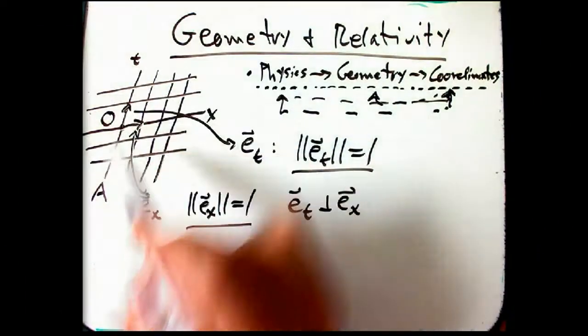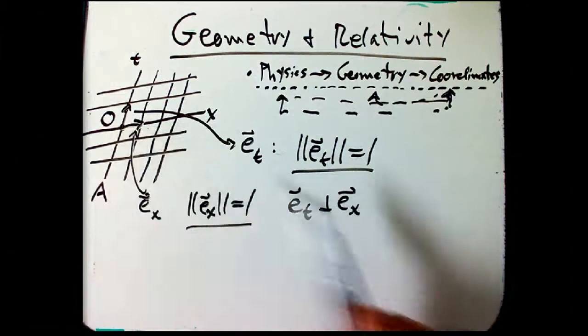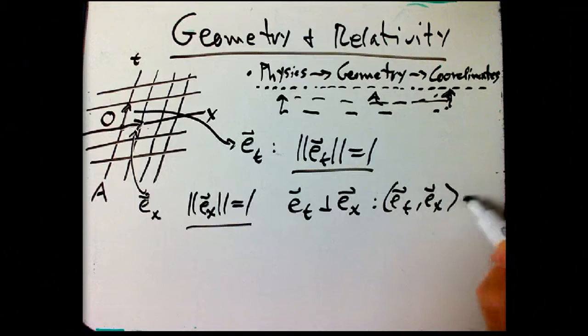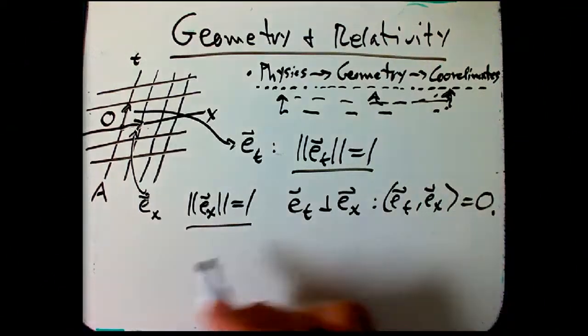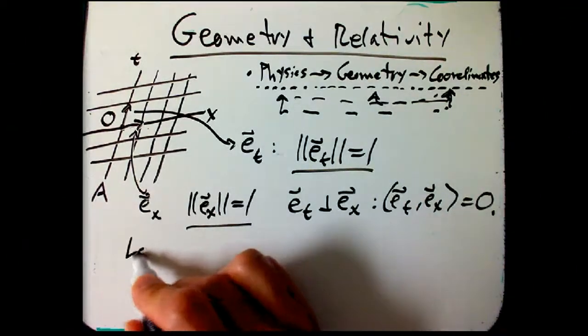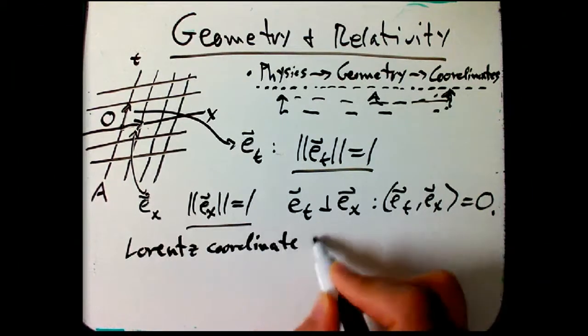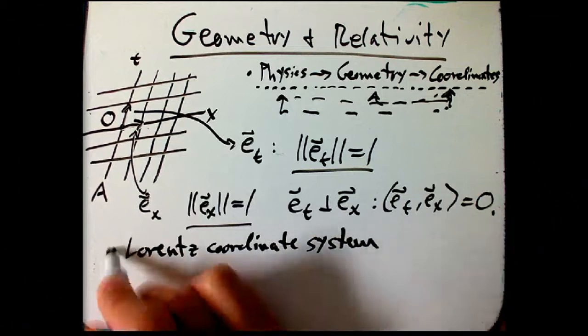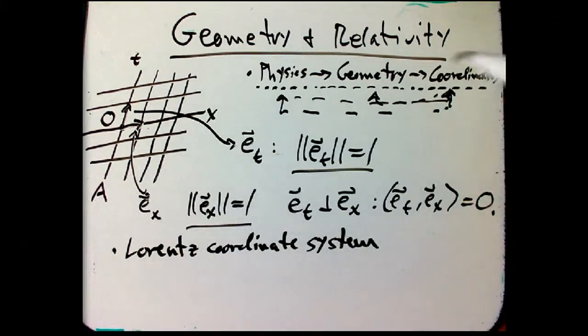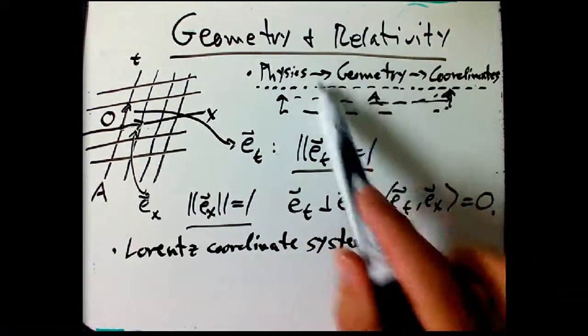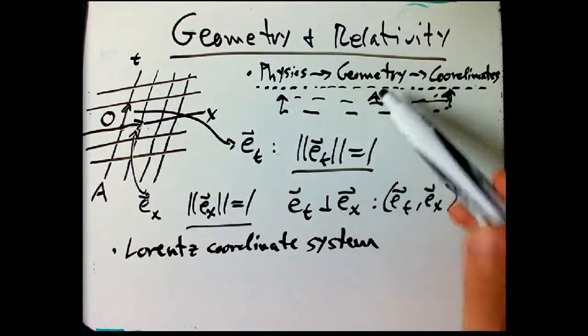And of course, we discovered that for one to be purely space and one to be purely time, so that this is only motion in time and so that these guys are considered to be simultaneous events, these should be perpendicular, or in other words, the scalar product should be zero. So this is a special kind of coordinate system called a Lorentz coordinate system.